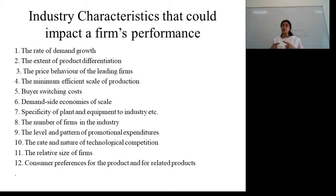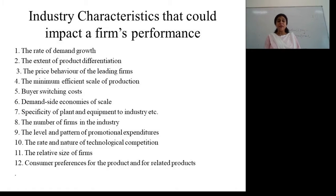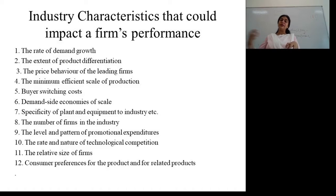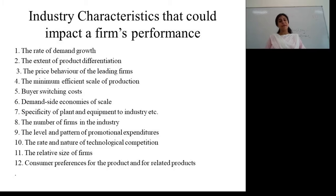Fifth, buyer switching cost — how much switching cost would a buyer incur by switching from one brand or product to another. Sixth, demand-side economies of scale — the balance between demand and supply. Seventh, specificity of plant and equipment in the industry. Eighth, the number of firms in a particular industry — how many companies are making competition for each other in the periphery. Ninth, the level and pattern of promotional expenditures. Tenth, the range and nature of the technology in competition. Eleventh and twelfth, the size of the firm and consumer preferences for the products.